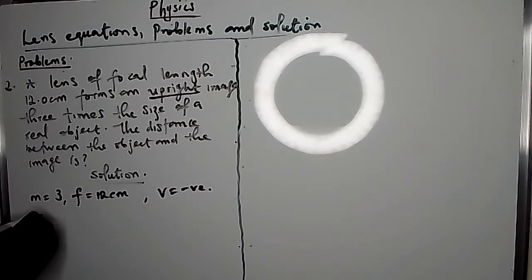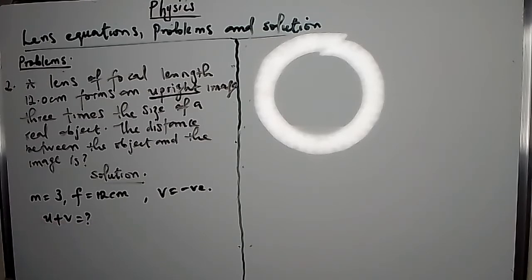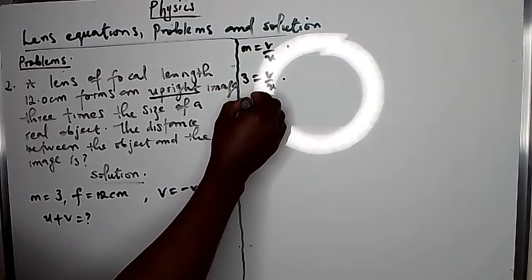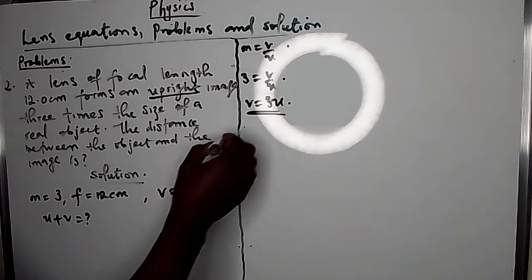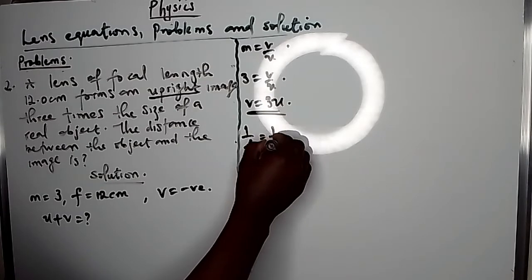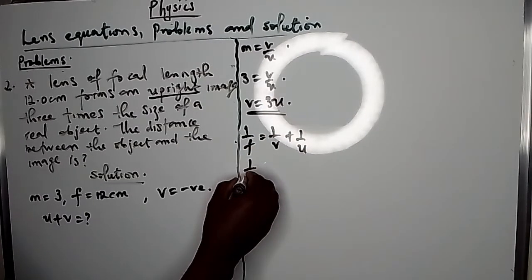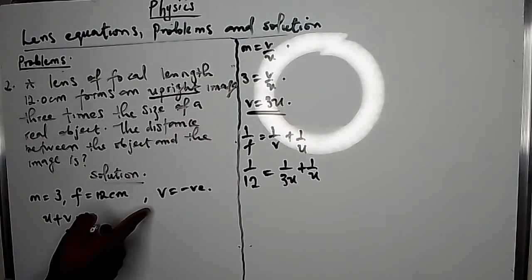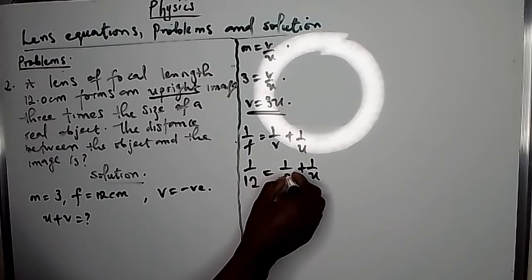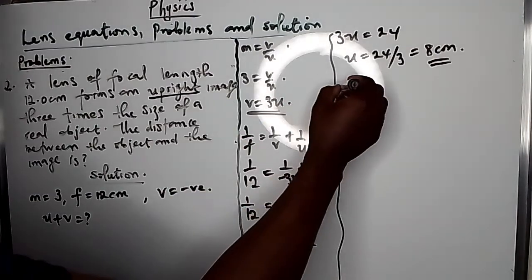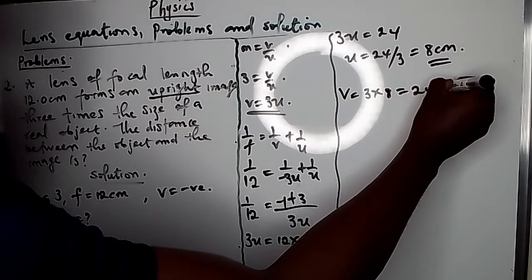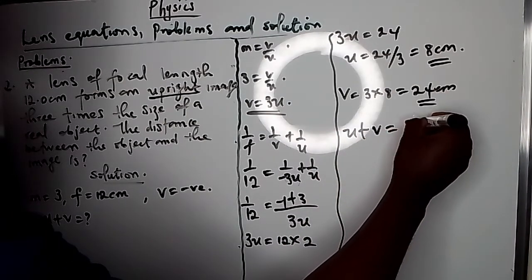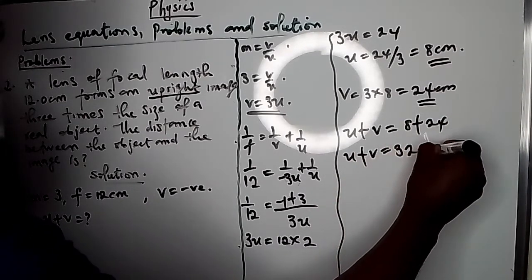We need U + V. From M = V/U = 3, we get V = 3U, but since the image is virtual, V = −3U. Substituting into 1/F = 1/V + 1/U: 1/12 = 1/(−3U) + 1/U. Solving gives U = 8 cm, and V = 3×8 = 24 cm. Therefore the distance between the image and the object is U + V = 8 + 24 = 32 cm.